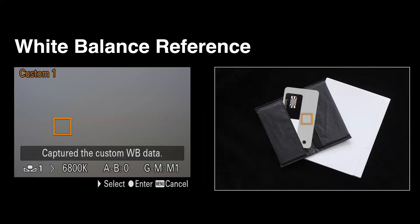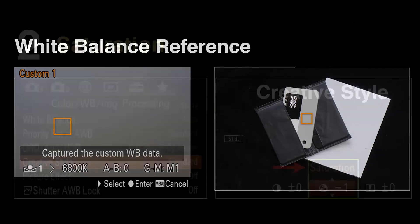In order to get a really accurate custom white balance, you need to point the camera at something you know is neutral. One of the products Jeremy sells has a white balance reference card. The custom white balance process means you point a square at the white balance reference, it measures that and makes it neutral. Then you've got a custom white balance instead of a preset.